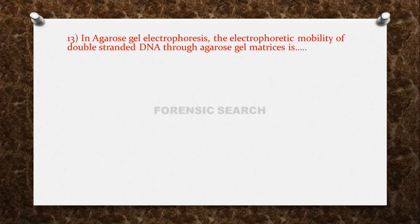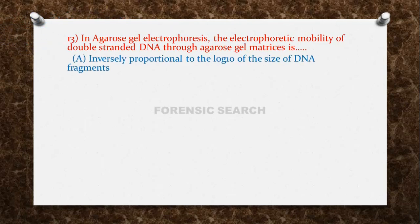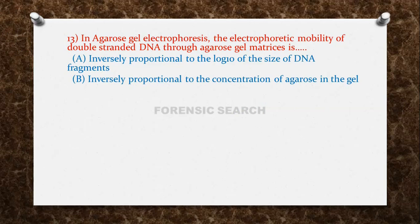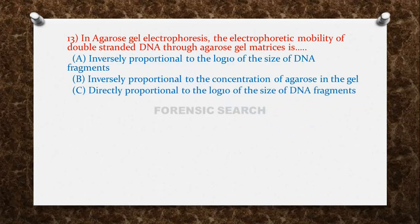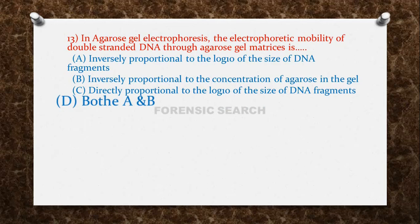The next question: in agarose gel electrophoresis, the electrophoretic mobility of double-stranded DNA through agarose matrices is — Option A: inversely proportional to the log10 of the size of DNA fragments. Option B: inversely proportional to the concentration of agarose in the gel. Option C: directly proportional to the log10 of the size of DNA fragments. Option D: both A and B. The correct answer is option D — both A and B are correct.